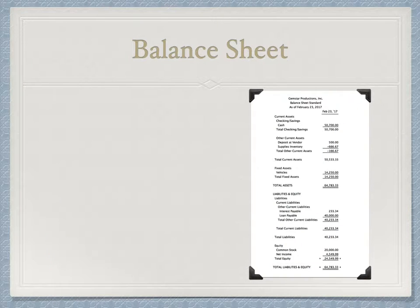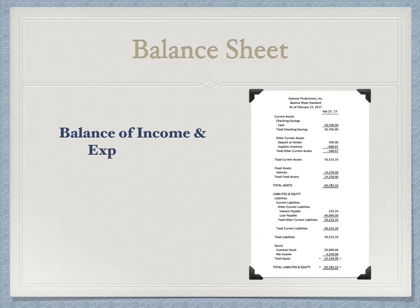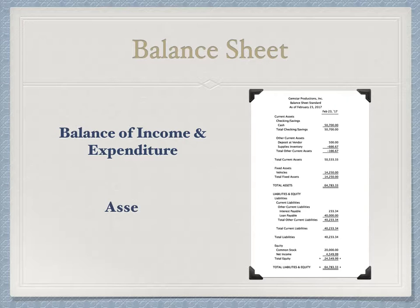Let's start out with the balance sheet, also known as the Statement of Financial Position. This statement details the balance of income and expenditure at the end of a specified date. It does so by showing us the company's asset, liability, and equity accounts as of that moment in time.